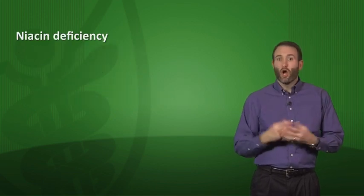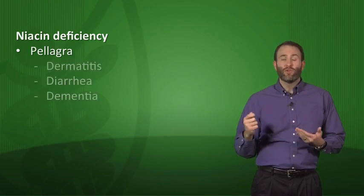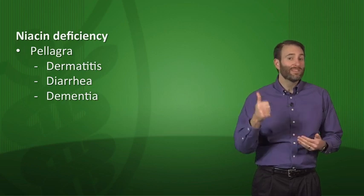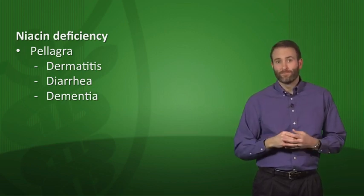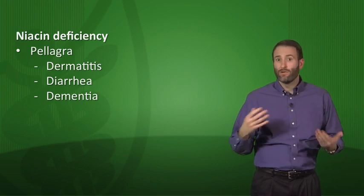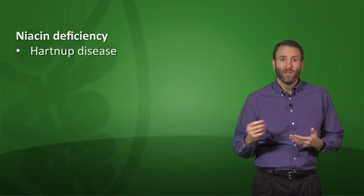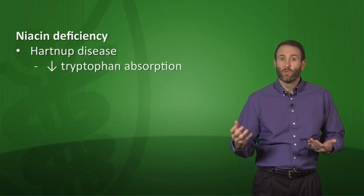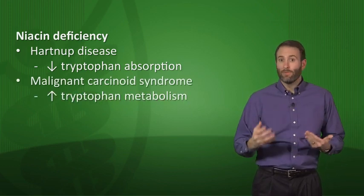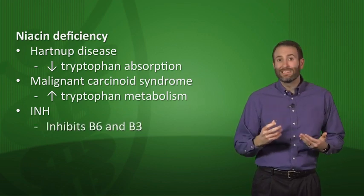Niacin deficiency causes pellagra. The three Ds of vitamin B3 deficiency are dermatitis, diarrhea, and dementia. Pellagra can occur from dietary deficiency, but also from Hartnup disease (decreased tryptophan absorption), malignant carcinoid syndrome (increased tryptophan metabolism), and isoniazid (INH), which inhibits both B6 and B3.